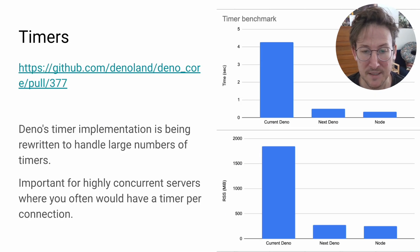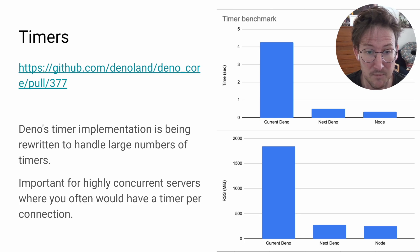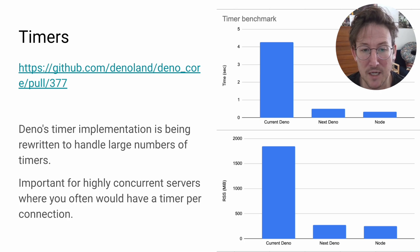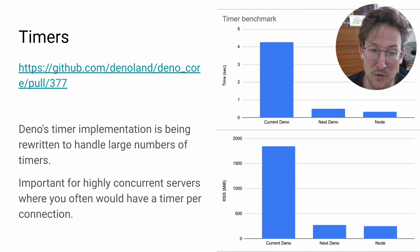Timers in Deno — that is setTimeout and setInterval — are also being reimplemented at the moment. This probably won't land in time for 1.39, but it's quite important work. Right now, handling many timers, like millions of timers in Deno, is relatively slow and takes quite a lot of memory, as you can see from this benchmark here. This is important because highly concurrent servers often will have a timer associated with each connection — for example, waiting for a connection to go idle. If you haven't seen any transmissions in the last 30 seconds, you might want to close that connection. So it's important for Deno to handle a large number of timers in an efficient way.